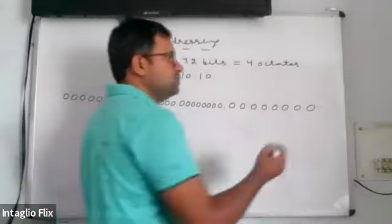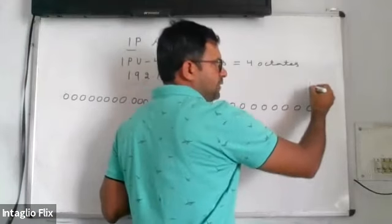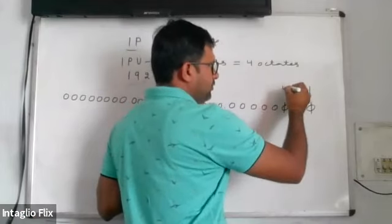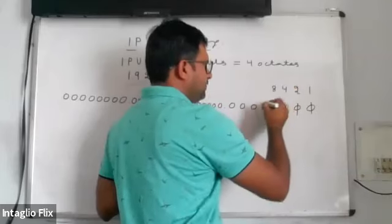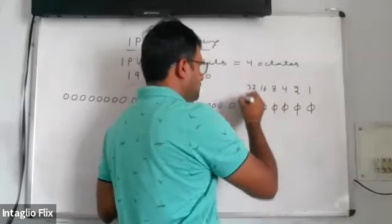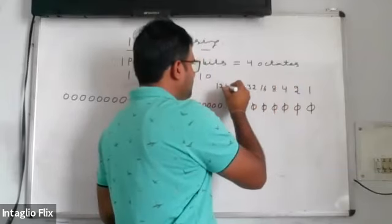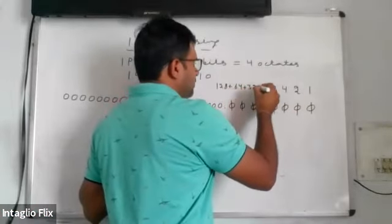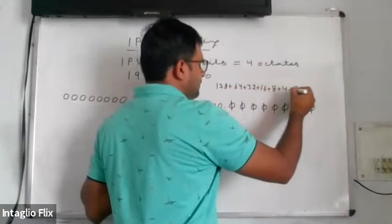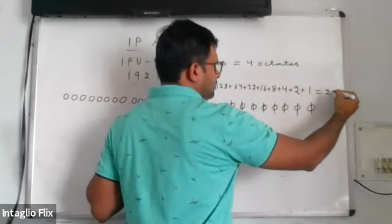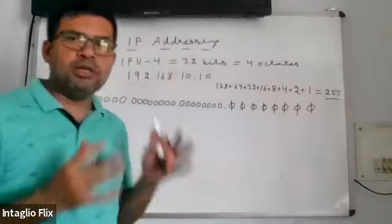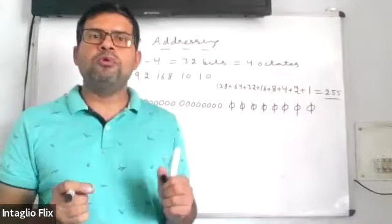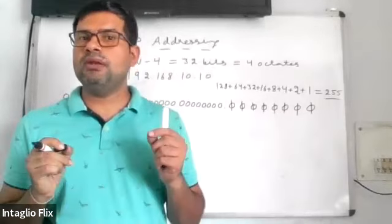If all bits are off, the value is zero. If the first bit is on, the value is 1. If the second bit is on, the value is 2. The third bit gives 4, the fourth gives 8, the fifth gives 16, then 32, 64, 128. The sum of all these values — 128+64+32+16+8+4+2+1 — equals 255. So in one octet, you cannot have a value more than 255.